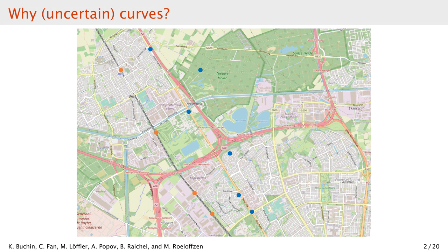Suppose we want to know how similar the two trajectories are. The standard way to check is to construct polygonal curves on the data and use some distance metric, such as dynamic time warping or Fréchet distance. However, the blue curve has some weird artifacts that will affect our similarity measure.